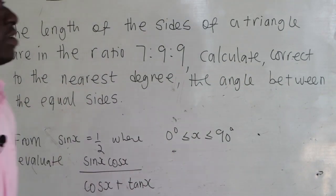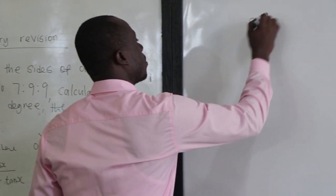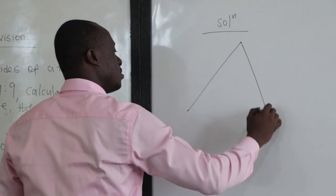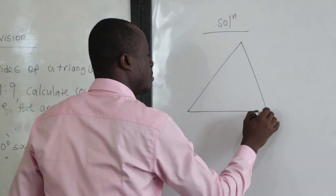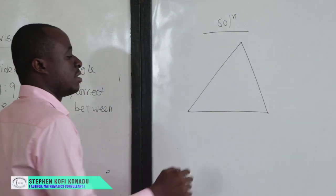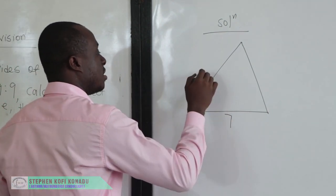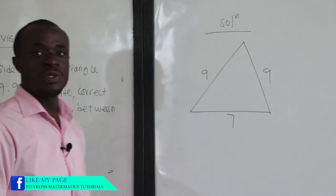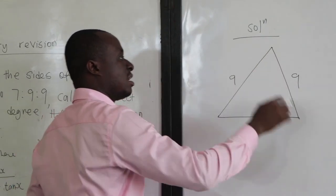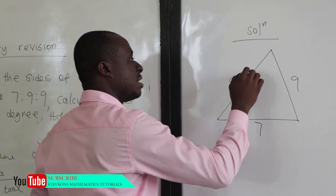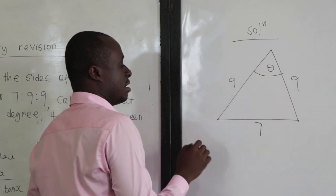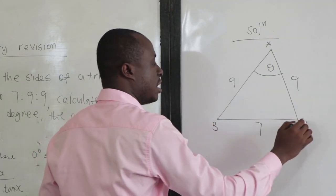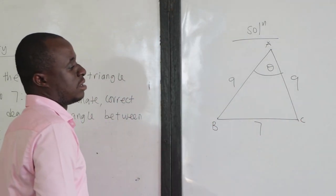Let's consider the first one. It's a triangle, so let's sketch a triangle. The ratio is 7 to 9 to 9, so let's suppose that this side is 7, this side is 9, and this would also be 9. We are being told to find the angle between the equal sides — so this is 9 and this is 9. The angle between the equal sides is theta. Let's name the vertices A, B, and C.